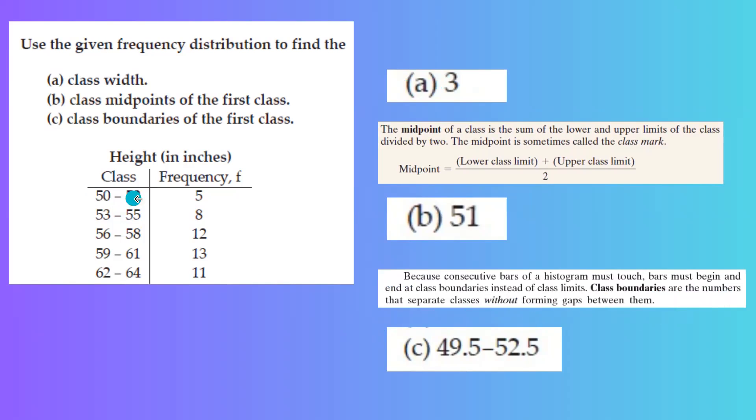So to form class boundaries, we're going to shift each one of these numbers a little bit to the left and to the right. So on the left hand side of 50, shifting a little bit, half a unit, you get 49.5. And when you shift 52 to the right hand side, you get 52.5.